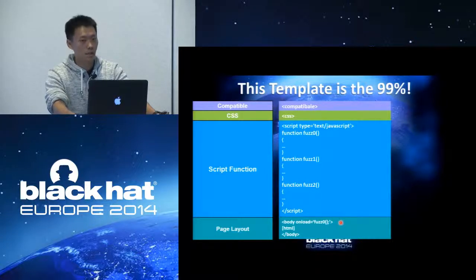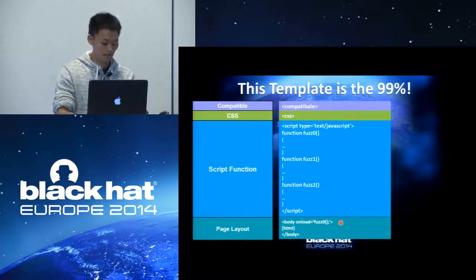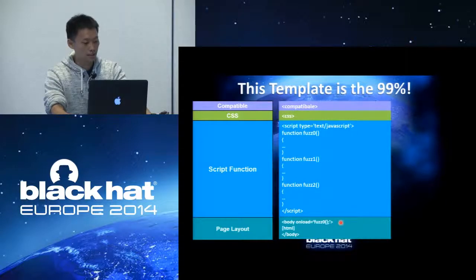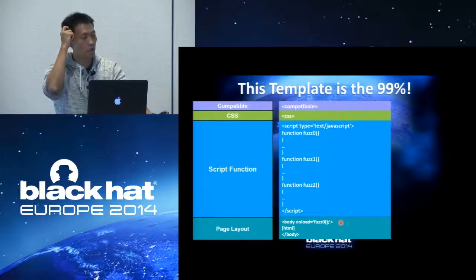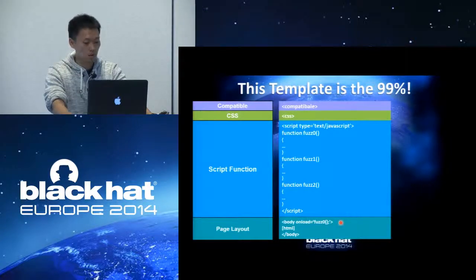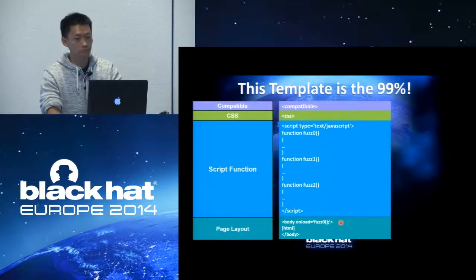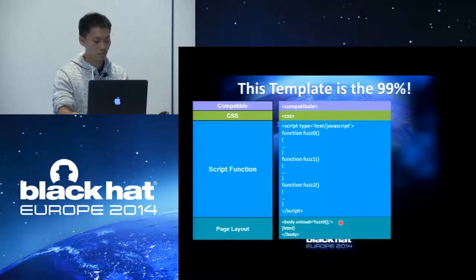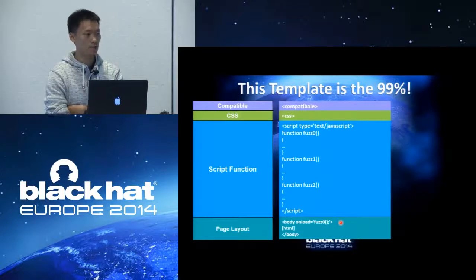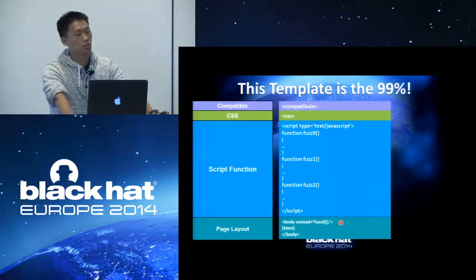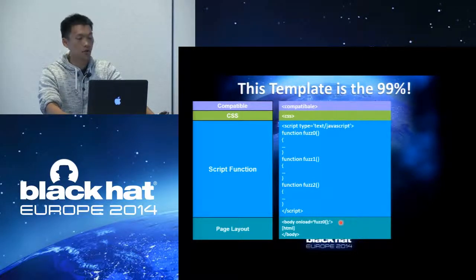Theoretically, we can discover almost every vulnerability with this template. But in fact it is impossible due to combination explosion — it would take a very long time to enumerate all combinations of HTML, JavaScript, CSS, and compatibility settings. So adding some randomness is the approach to solve this problem. Some randomness is necessary to help us construct test cases that are nearly impossible to conceive, because web pages that are easy to conceive may have already been tested by QA. But randomness also has some drawbacks.